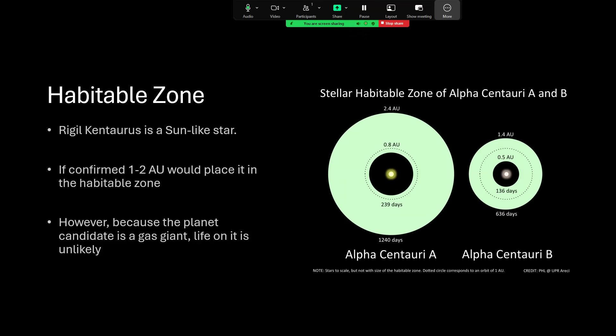It's a cooler star than our Sun, so you have to get a bit closer into it. But nevertheless, it's unlikely that a gas giant planet the size of Saturn orbiting in an orbit like this is going to be habitable directly and have its own life on it.